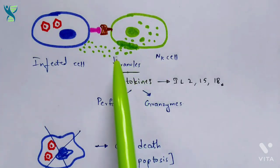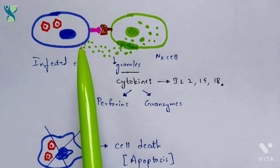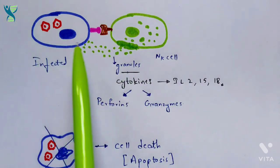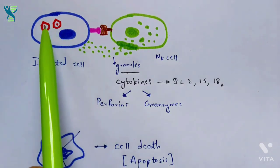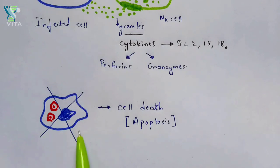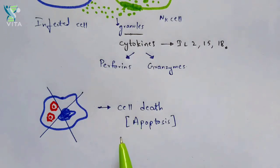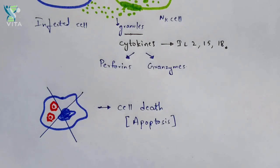With the help of perforins, the cell membrane of the infected cell gets broken down. Once the cell membrane is broken, granzymes enter into the cytoplasm of the infected cell and start killing the viral particles present there. Finally, this leads to cell death — the viral particles inside are killed, and the infected cell is also killed. This process is called apoptosis, also known as programmed cell death, because there is a complex program involved in causing the death of that particular cell.